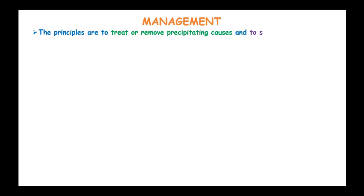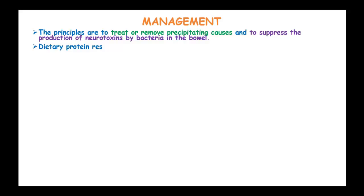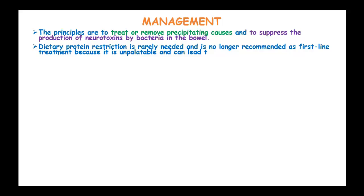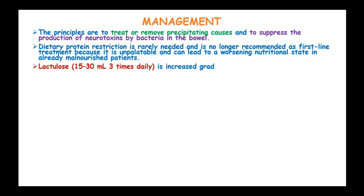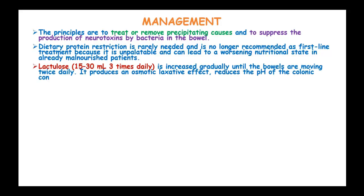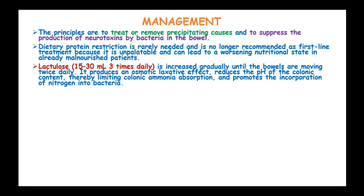The principles of treatment are to treat or remove precipitating causes and suppress the production of neurotoxins by bacteria in the bowel. Dietary protein restriction is rarely needed and is no longer recommended as a first-line treatment because it is unpalatable and can lead to worsening nutritional status in already malnourished patients. Lactulose at a dose of 15 to 30 milliliters three times daily is increased gradually until bowels are moving twice daily; this produces an osmotic laxative effect, reducing the pH of the colonic content, thereby limiting colonic ammonia absorption and promoting the incorporation of nitrogen into bacteria.